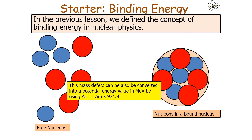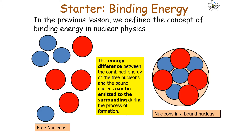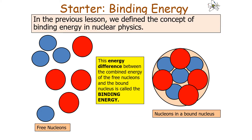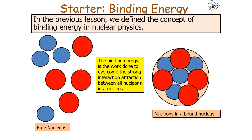We can also convert the mass defect into a potential energy value in MeV using delta E equals delta m times 931.3, where the mass defect is measured in atomic mass units (U). This energy difference between the combined energy of the free nucleons and the bound nucleus can be emitted to the surroundings during nucleus formation. This energy difference is called the binding energy — the work done to overcome the strong interaction attraction between all nucleons, or equivalently, the energy needed to separate all nucleons in a nucleus into separate free nucleons.